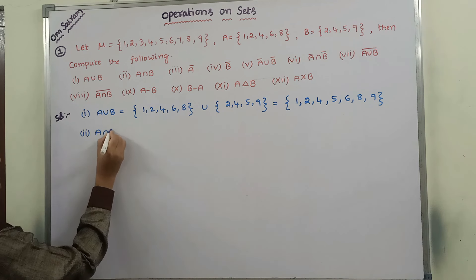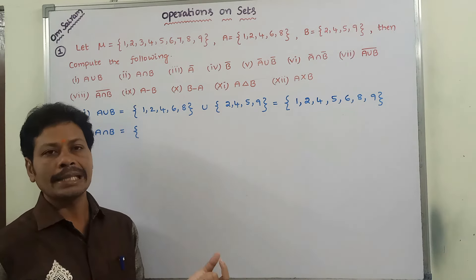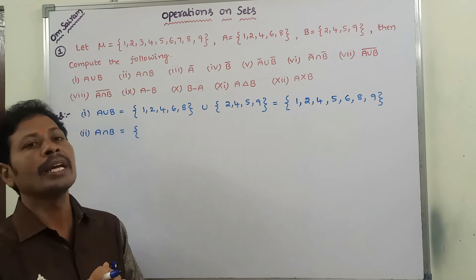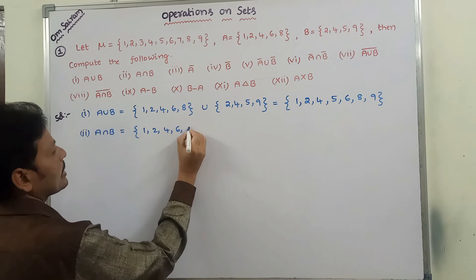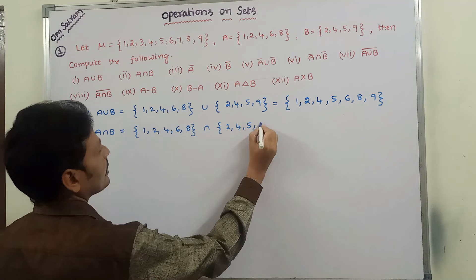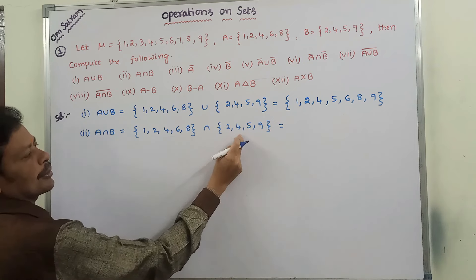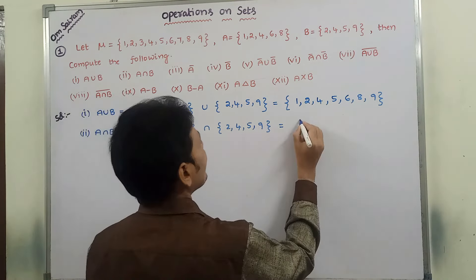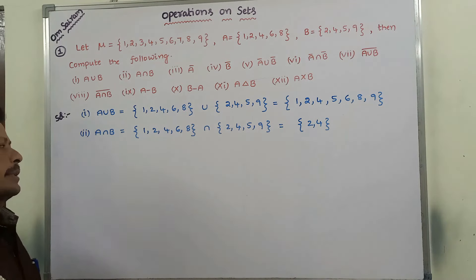Second, A intersection B is the common elements between set A and set B. Set A = {1, 2, 4, 6, 8} intersection set B = {2, 4, 5, 9}. The common elements between them are 2 and 4. So A intersection B = {2, 4}.